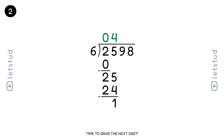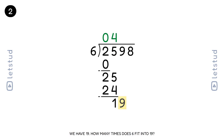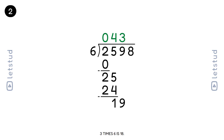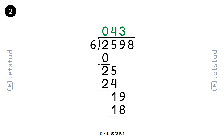Time to grab the next digit. We have a remainder of 1 and bring down the 9 to make 19. 6 fits into 19 three times. 3 times 6 is 18. 19 minus 18 is 1.